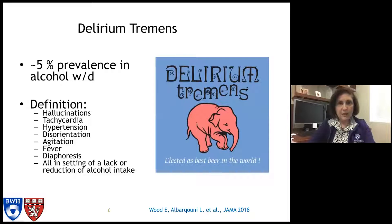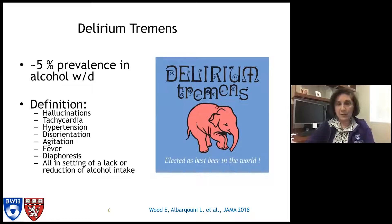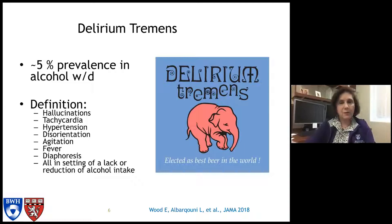Delirium tremens is what's normally seen in the ICU, and I'm going to focus on that for the next few minutes. If you are drinking a lot and then stop drinking, you are at significant risk of developing this very bad syndrome. It's about 5% prevalence in alcohol withdrawal — so not everyone who goes into alcohol withdrawal is going to get it, but for those that do, it can be quite severe and a significant cause of mortality.